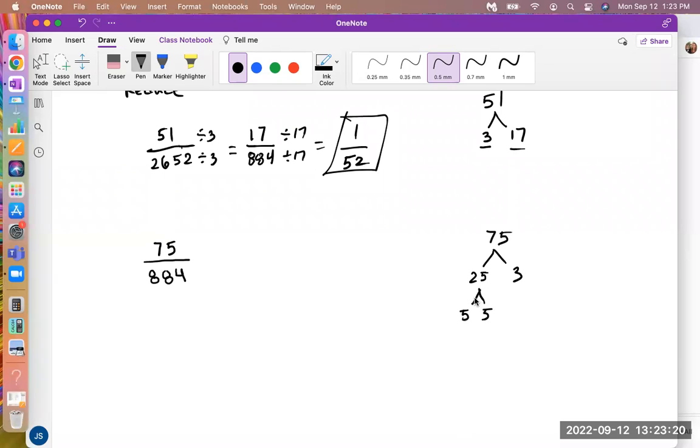So what we have to do to show that this is reduced completely, is all I have to show is that 5 does not divide into 884, and 3 does not divide into 884. As soon as I see that those two numbers don't divide into 884, then we can say with confidence that this entire fraction is completely reduced. So let's try it. Does 5 divide into 884?